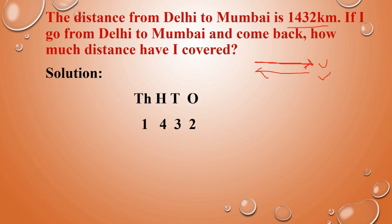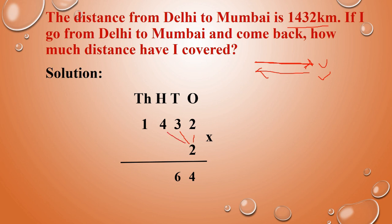So in the distance you have to multiply by two. You have to arrange in column: 1432 into 2. Same way, first from the ones place we have to start. 2 twos are 4. In the tens place: 3 twos are 6. In the hundreds place: 4 twos are 8. In the thousands place: 1 into 2, that is 2. So the answer is 2,864.